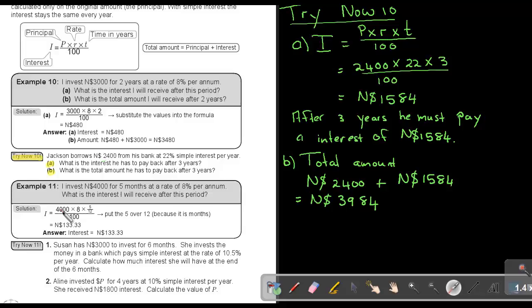Exactly the same. They take the 4,000, the principal, times the 8, the rate, but now, because it's just 5 months of a year, they just say 5 divided by 12, because there's 12 months in a year. So they make it a fraction. And then you do exactly the same. You divide by 100, and you will get 133.33. So the interest you will get after 5 months will be $133.33 Namibian dollar.